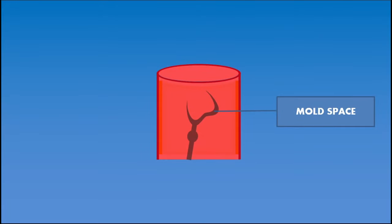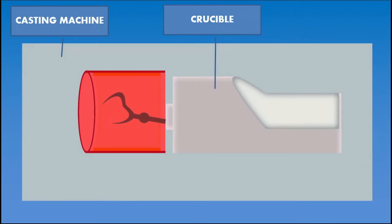At the end of the burnout process, there will be an empty space which was previously occupied by the wax pattern and sprue former. This empty space inside the investment is called mold space. Still, the casting ring investment setup is hot. It is transferred to a casting machine.